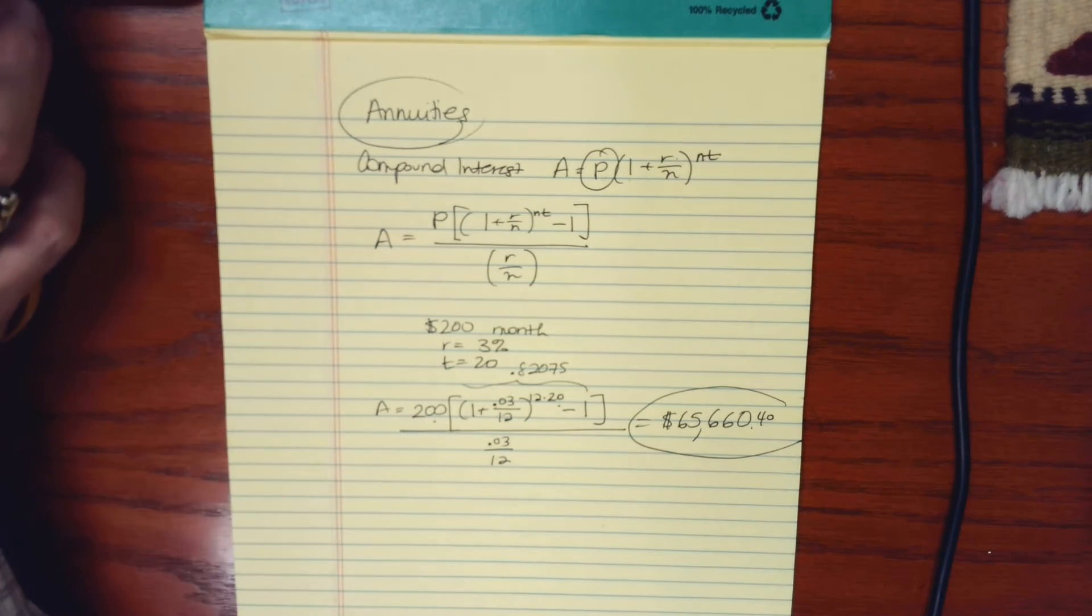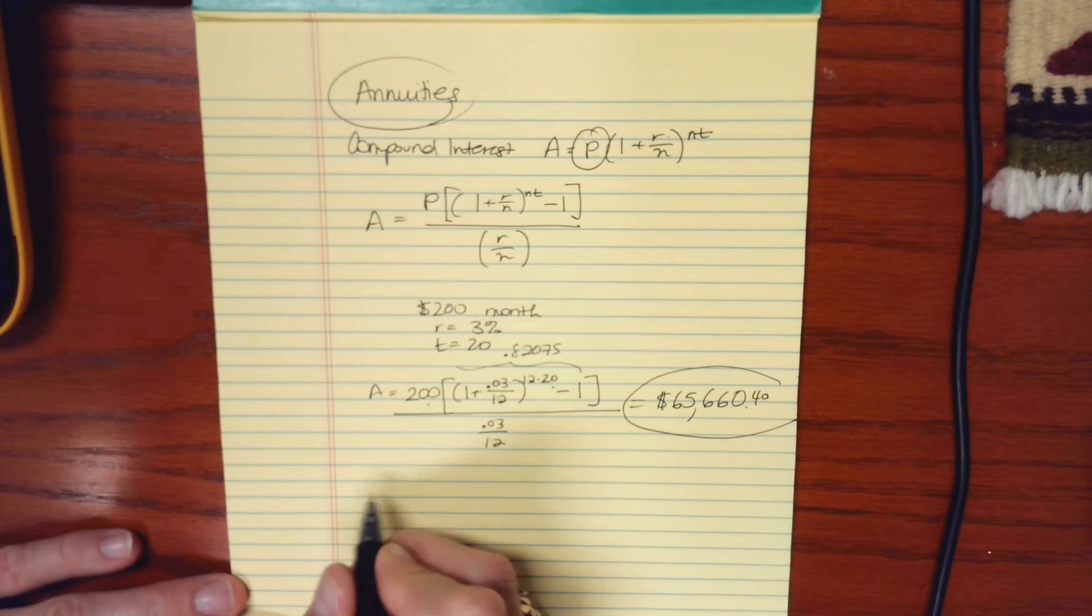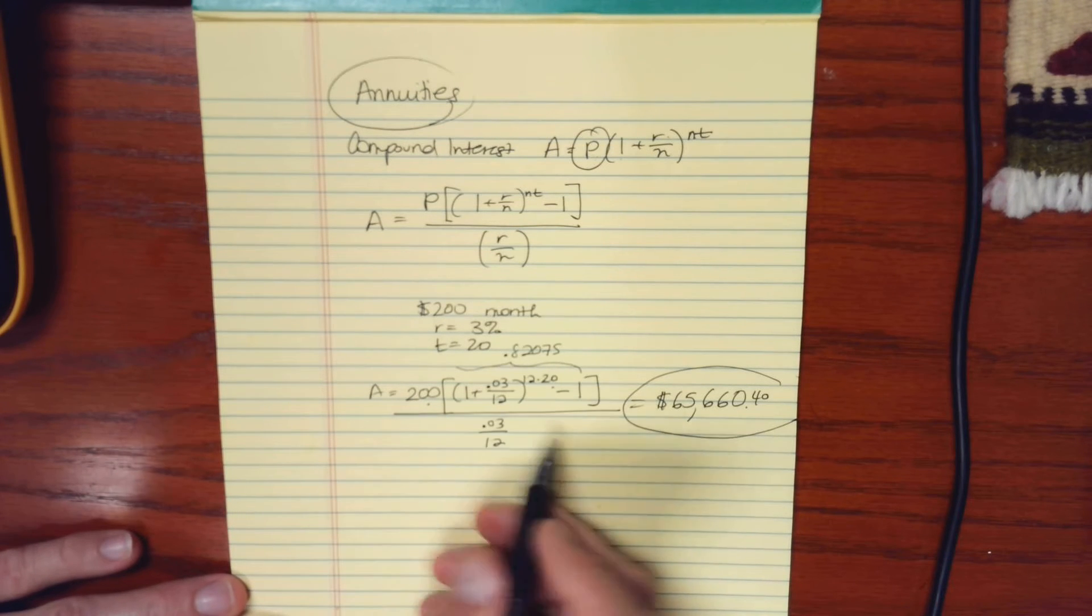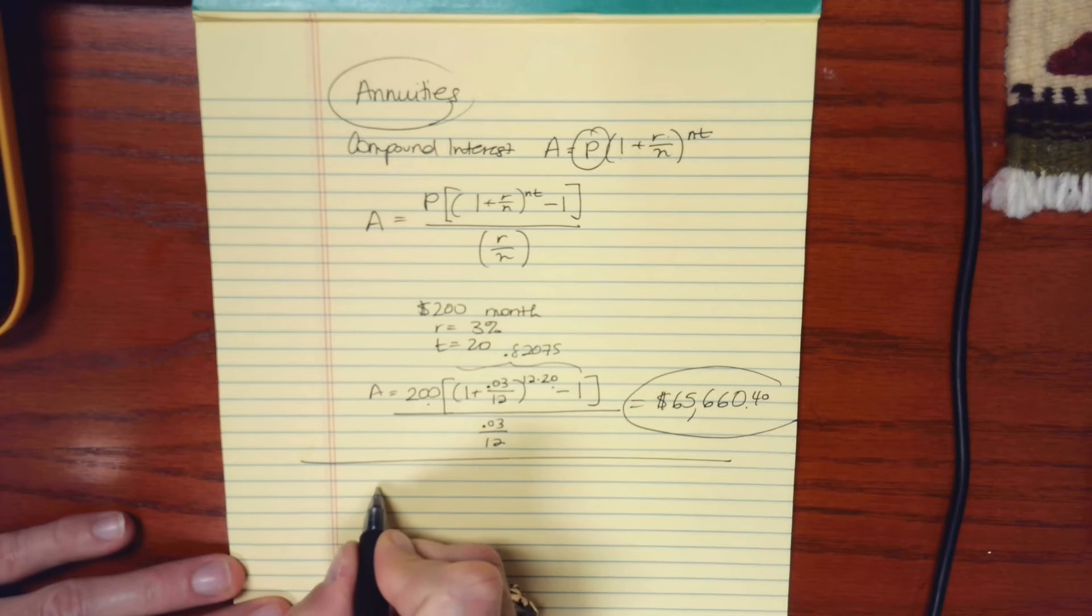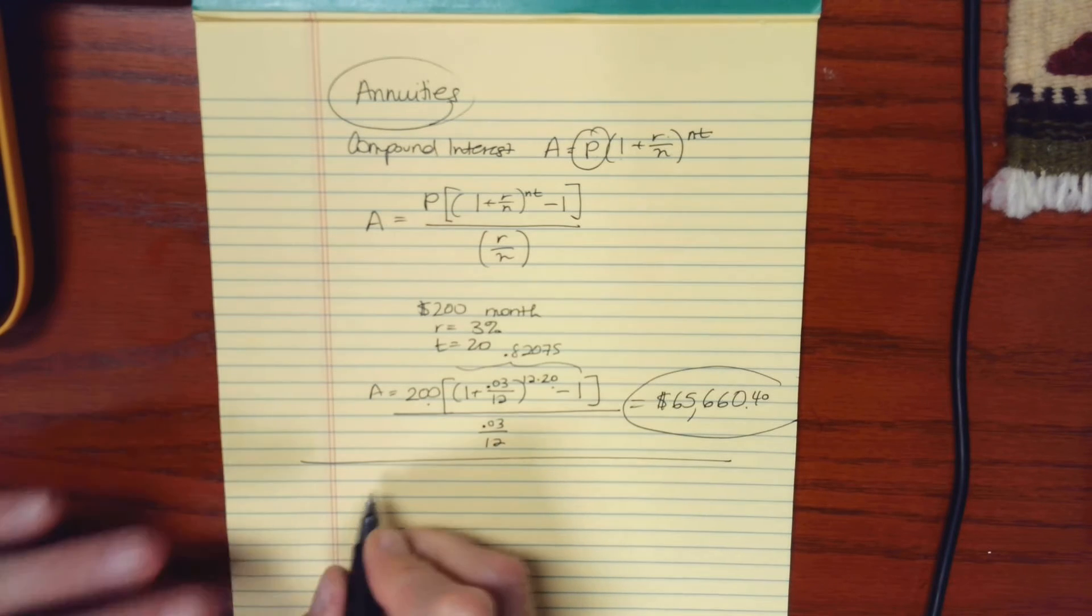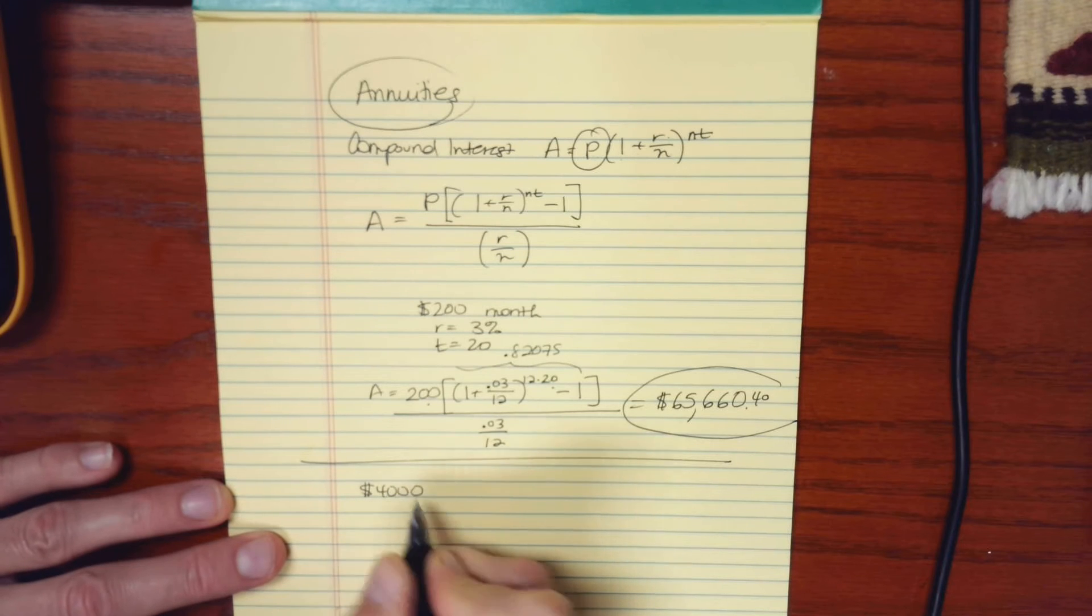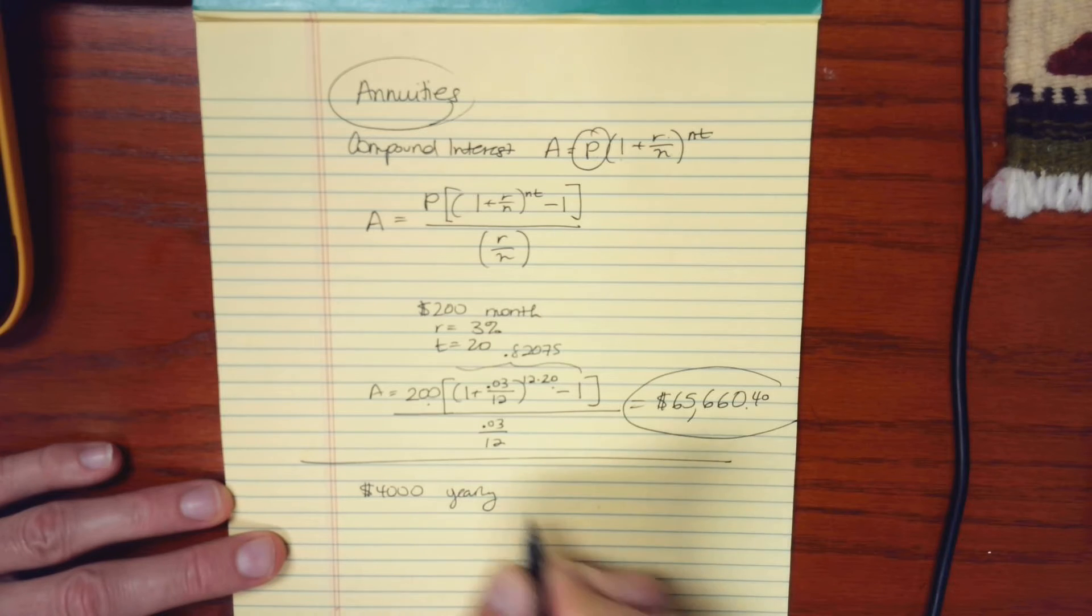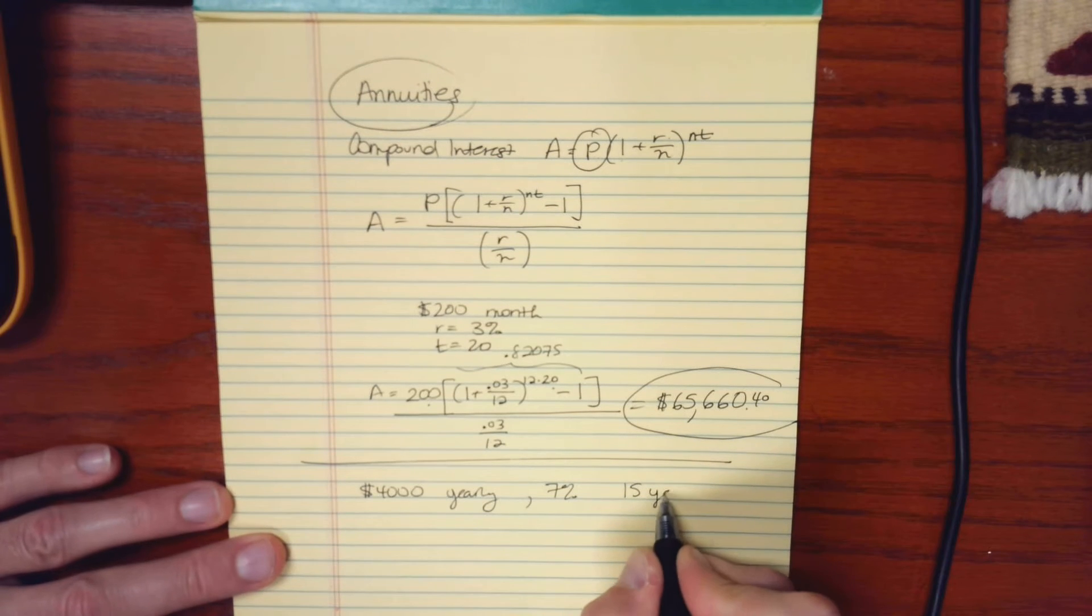Okay, so let's look at another scenario here. Maybe you don't set aside money monthly, maybe you do it annually. And so for this example, let's say you can make a larger contribution of maybe $4,000 at the end of each year. So that's going to be yearly. And you can earn 7%. And let's say that you've got 15 years to do this.